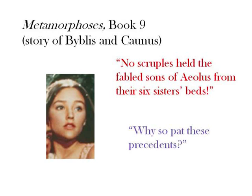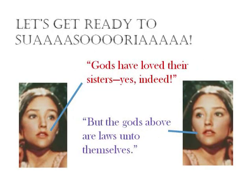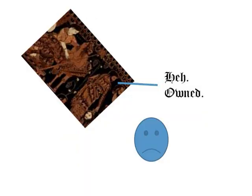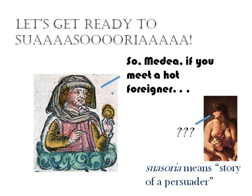When Ovid has Byblis say 'why so pat these precedents' at the end of that passage, he's making reference to the pat nature of the exempla that would have been used in the Swasoriae. And so he's letting his audience know that, in fact, he's doing this like a Suasoria. The big difference is that, like the other women doing their interior monologues, Byblis goes back and forth on the question. And so she's actually doing both sides of the Suasoria. That is, there would have been one student persuading a mythological character one way, another student persuading a mythological character another way. And here Ovid is combining them both into one speech, I think more or less just for fun.